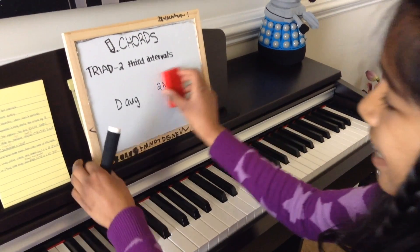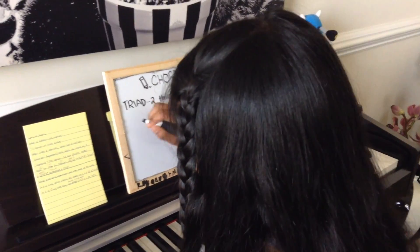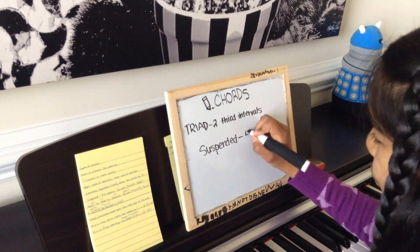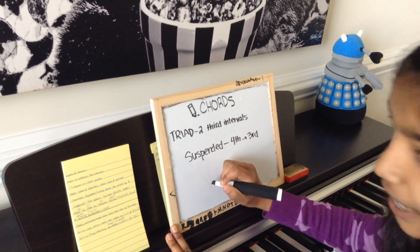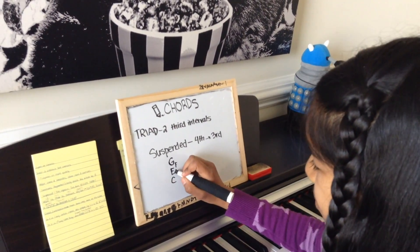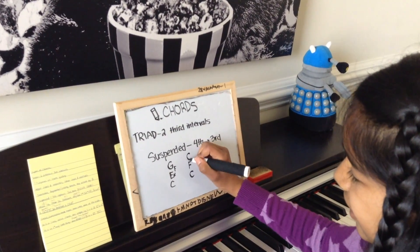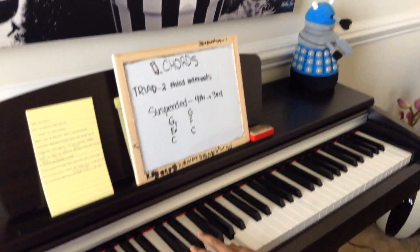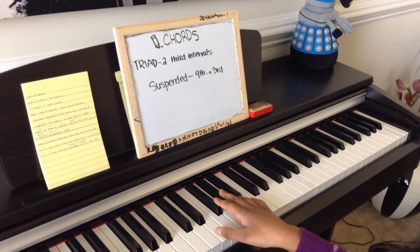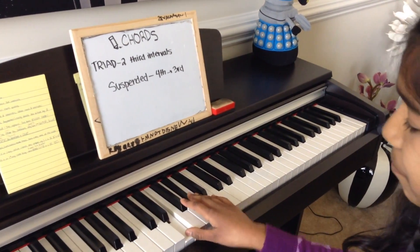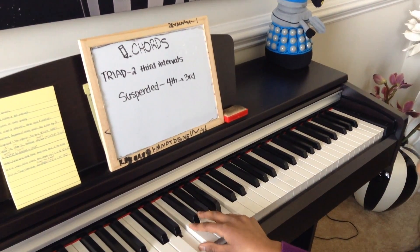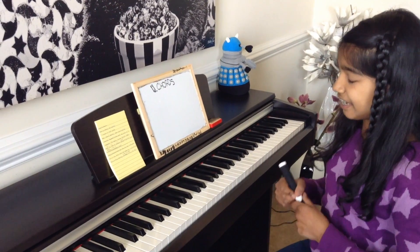The last type of triad is a suspended chord, where the fourth replaces the third. So you would have your major chord, but since F is the fourth, it replaces the third. You would have C, F, G — and it sounds like this. Let's try an E suspended chord. Your E major chord is E, G sharp, B, but the fourth is A, so instead of G sharp you play A. So it's E, A, B.